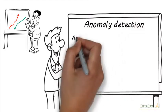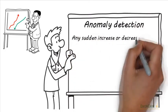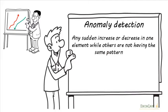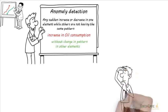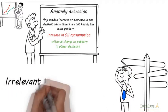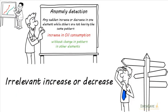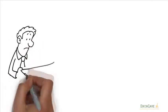Anomaly detection means detecting any sudden increase or decrease in only one element, like having a sudden increase in oil consumption without a change in pattern in the other elements. Anomaly detection reveals any irrelevant increase or decrease in an element that shouldn't have an increase or decrease in behavior by itself, alerting a case of fault, misuse, or need for maintenance.